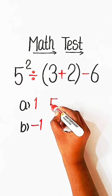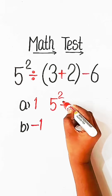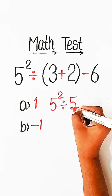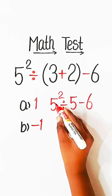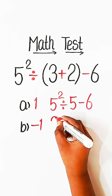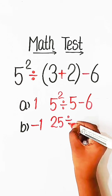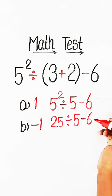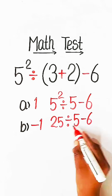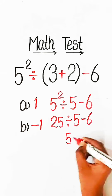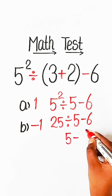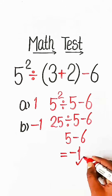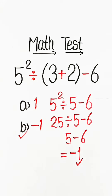5 squared divided by 3 plus 2 is 5 minus 6. 5 squared can be written as 25, divided by 5 minus 6. 25 divided by 5 is 5, minus 6 equals to minus 1. So Option B, minus 1, will be the correct answer.